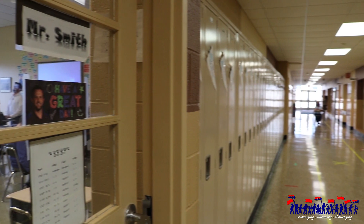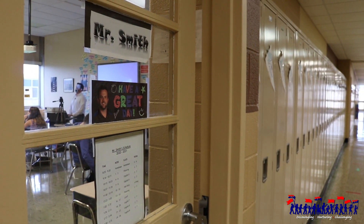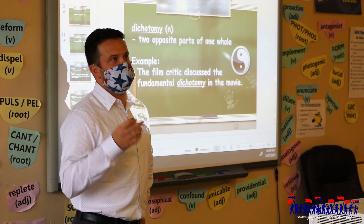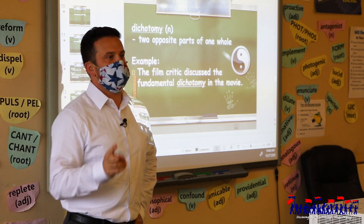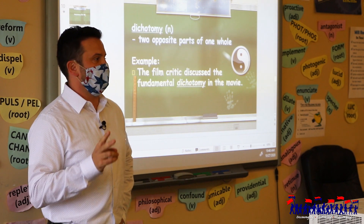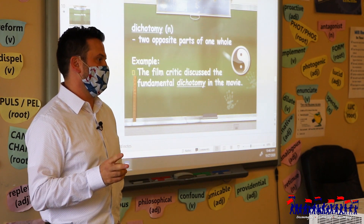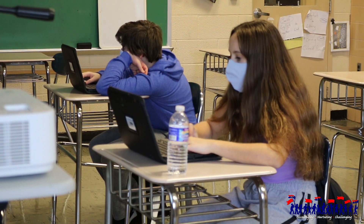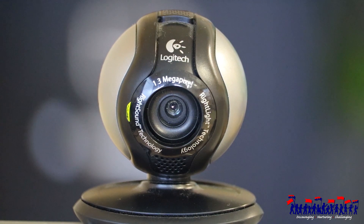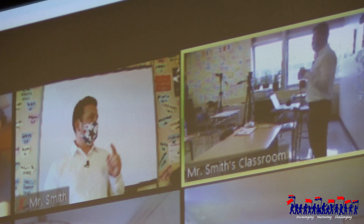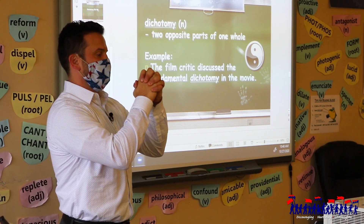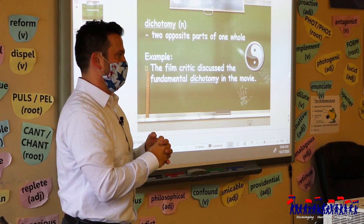Dichotomy. It's a noun and its definition is two opposite parts of one whole. It goes together, but on one hand you have one thing and then you have the exact opposite or different thing on the other hand. But it's still part of the same whole.